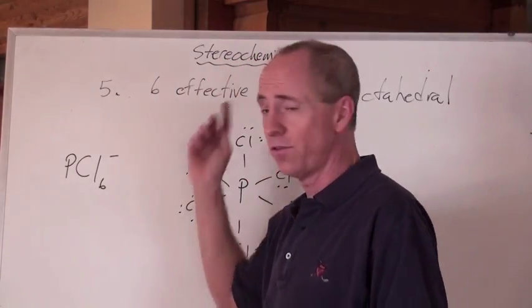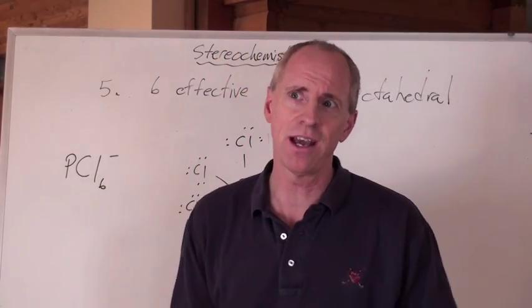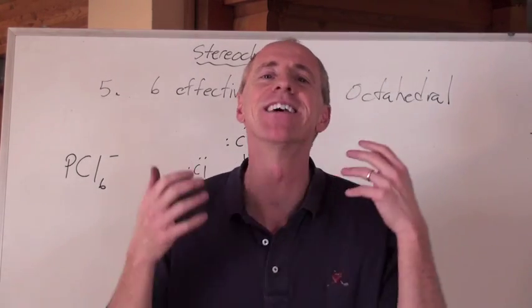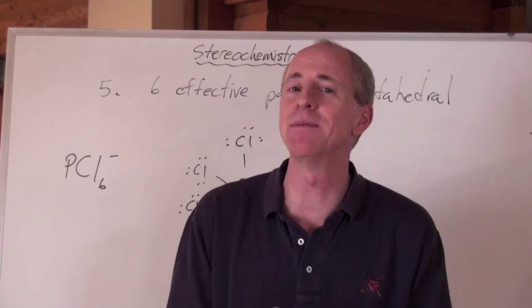And the last one is when you have six effective pairs around there. Actually, you can have a molecule that has seven effective pairs. Maybe I'll tell you about that in a second. But here's six effective pairs is pretty much the limit that you have to go.